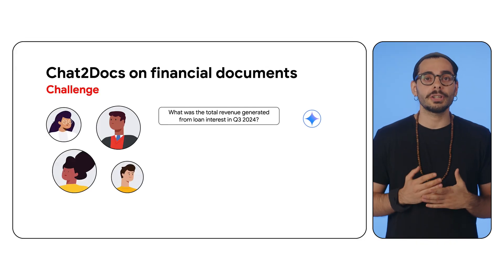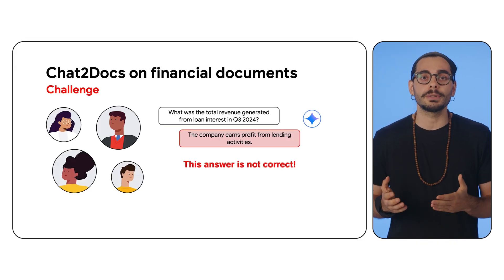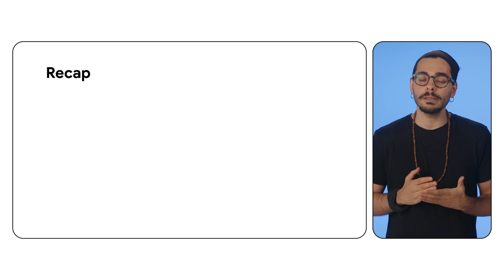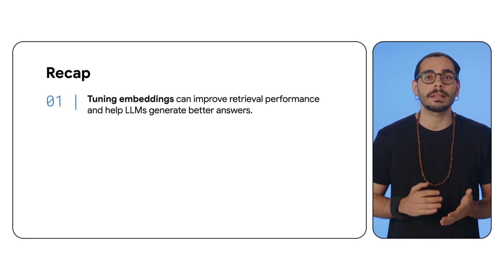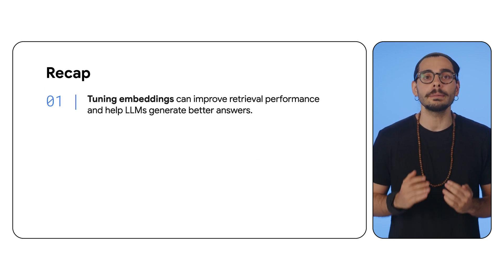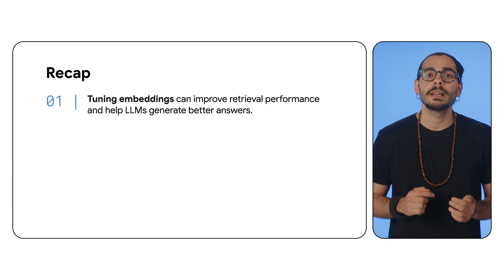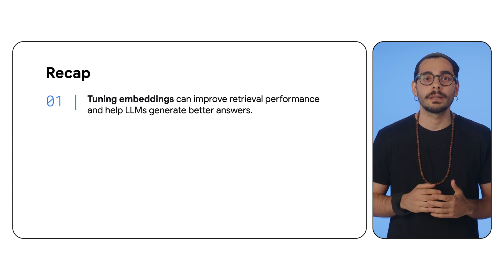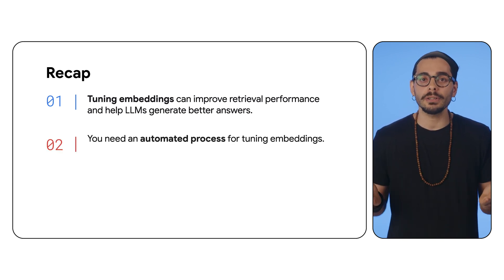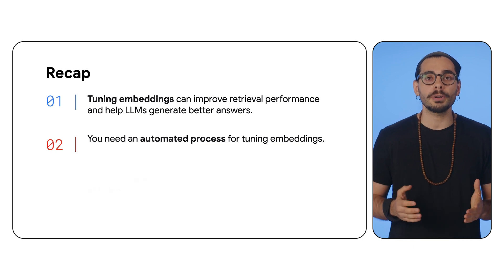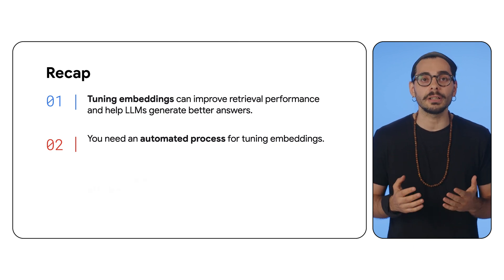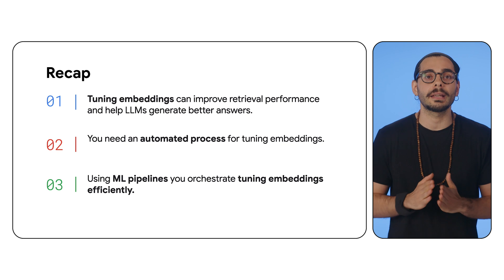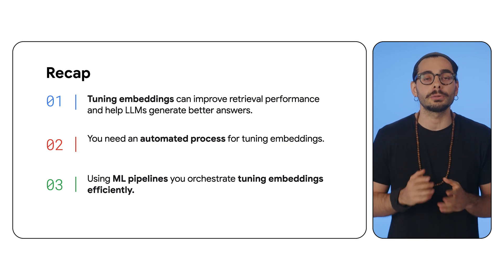Remember the initial challenge about the quality of responses in the Chat2Docs application? To tackle this challenge, tuning embeddings can significantly improve retrieval performance and enable the LLM to generate better answers. At scale, when you have thousands of documents, an automated process is essential for efficient embeddings tuning, and using ML pipelines can orchestrate this tuning process.